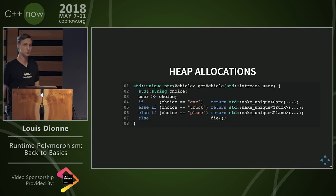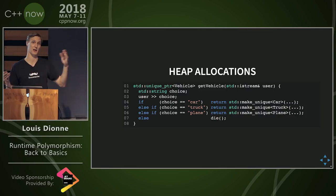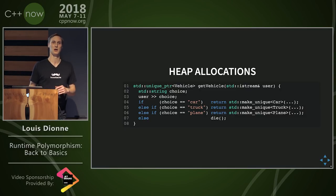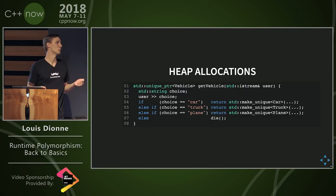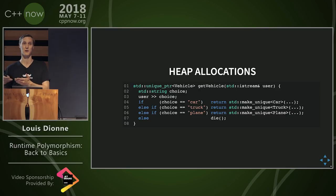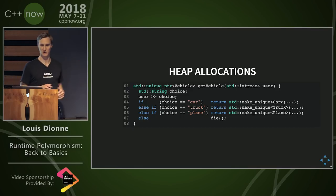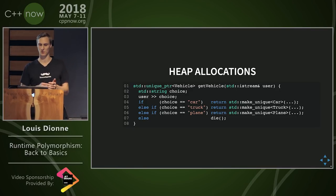Because we're manipulating pointers and don't know the size of the actual vehicle — it might be a car, truck, or plane — and all we're manipulating is a pointer to that, we kind of have to allocate it on the heap. Technically we can create a car on the stack and pass a pointer or reference to it to a function, but then you have scoping issues. So typically you end up with heap allocations when you start using inheritance. That's kind of unfortunate.